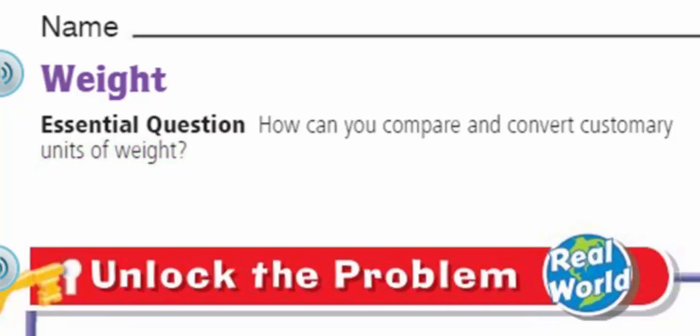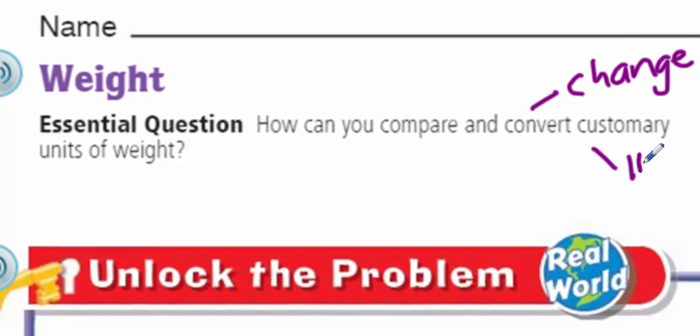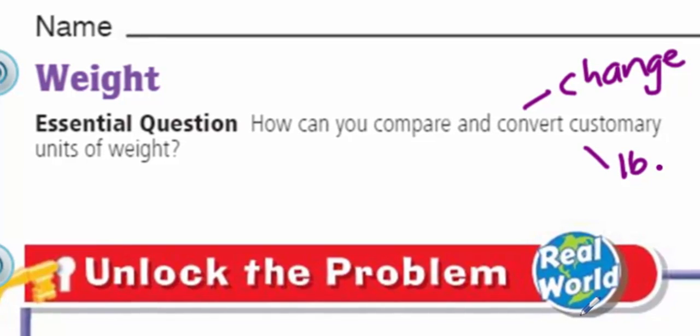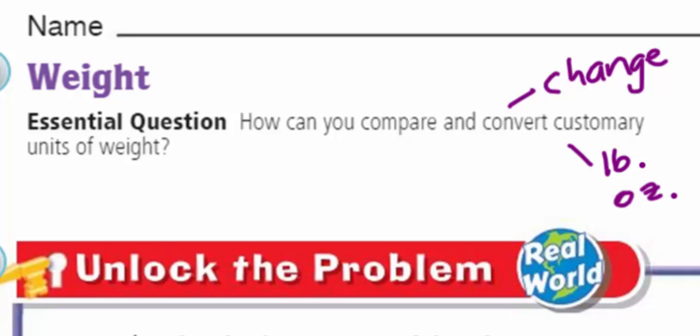As you can see, we are doing lesson 10.3. Our topic here today is simply weight. Here's our essential question — our learning target, our objective. It states: how can you compare and convert customary units of weight? Compare and convert — now 'convert' refers to change. And for us, customary units of weight, we use units such as the pound and ounces. Those are the customary units we here in the United States typically use.